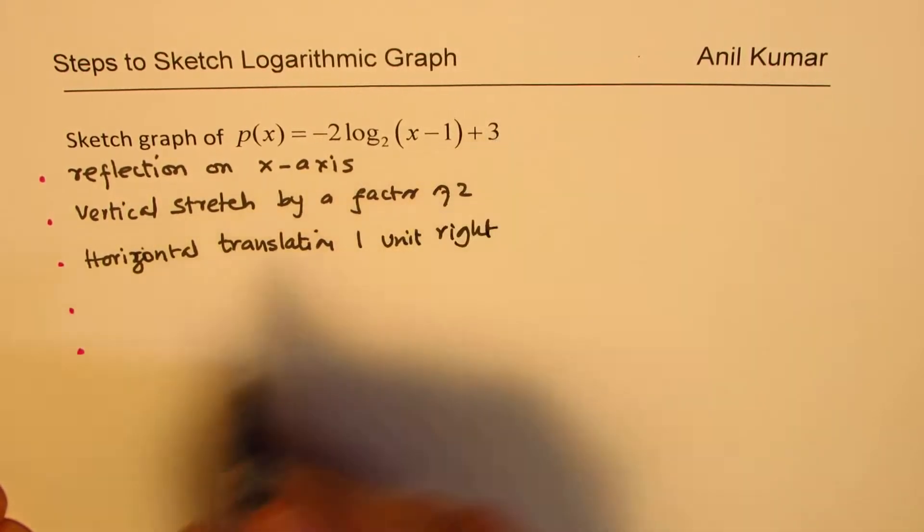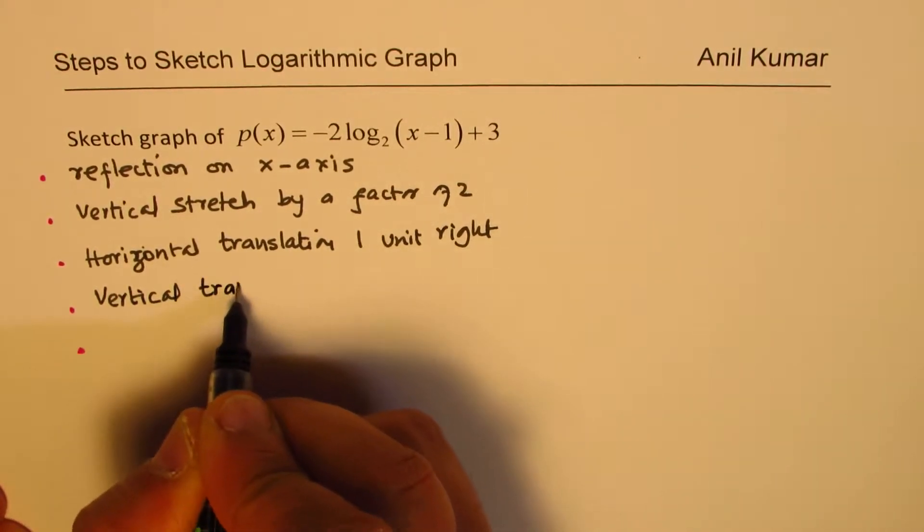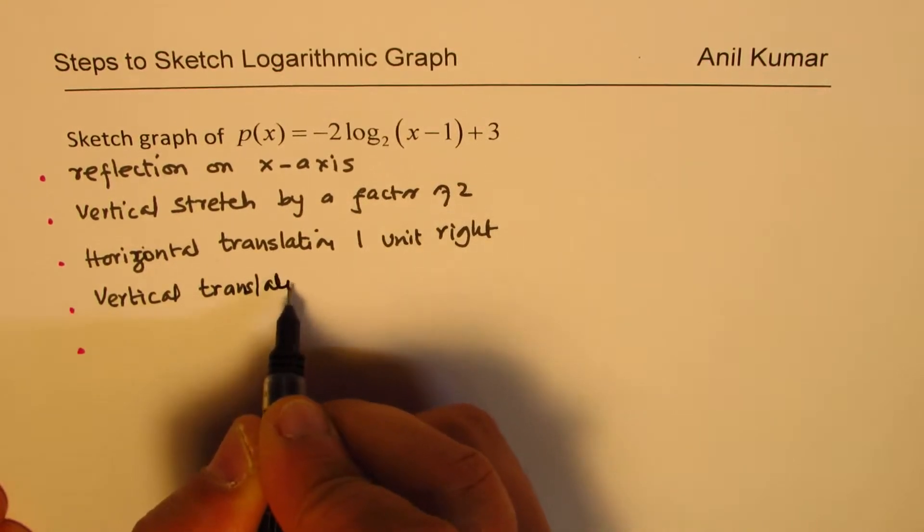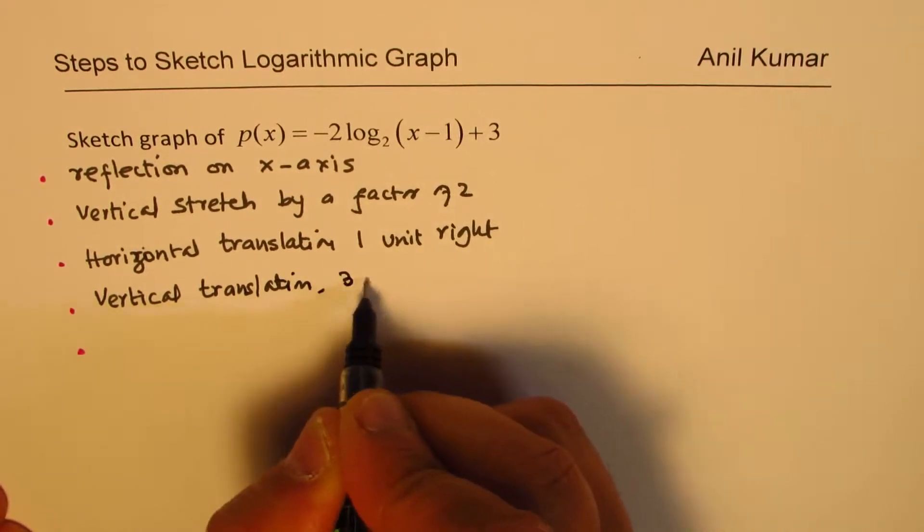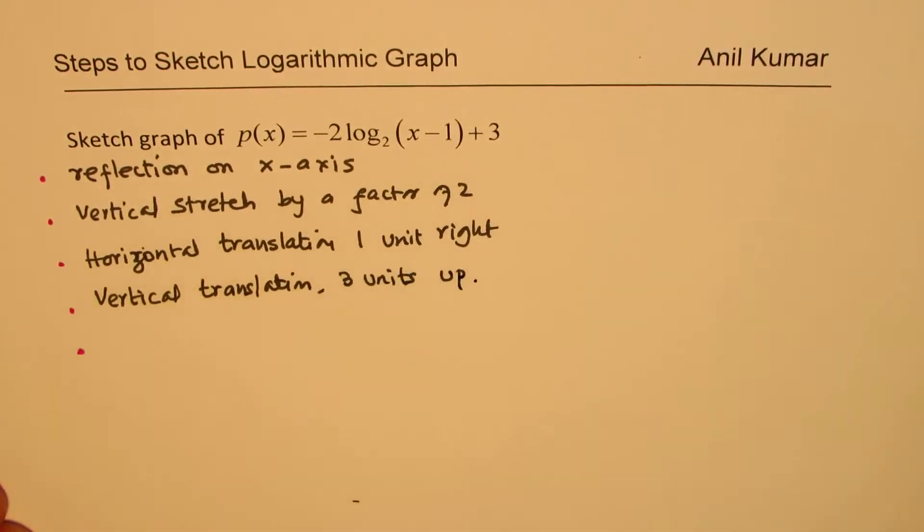And 3 is vertical translation, 3 units up. So combining all this we get our transformed function.